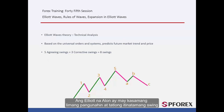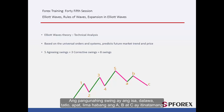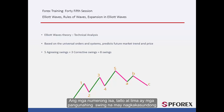Elliott Wave includes five major and three corrective swings. Numbers 3, 5 and 8 are available on the Fibonacci sequence. The major swings are 1, 2, 3, 4, 5, while A, B and C are corrective swings, in which B has an agreeing direction with the major trend. Numbers 1, 3 and 5 are the major swings agreeing with the major trend, while numbers 2 and 4 are reversal major swings.